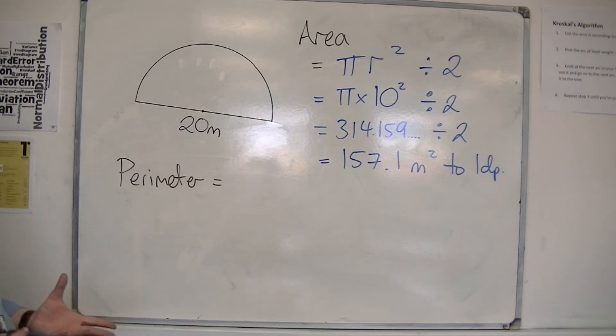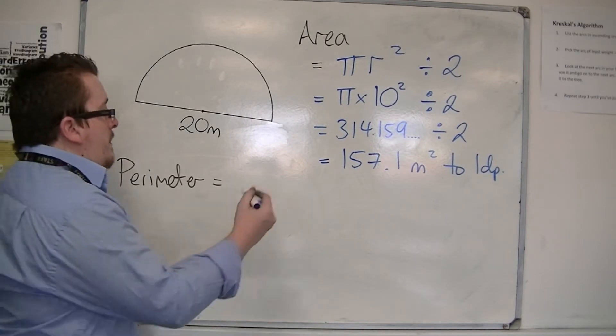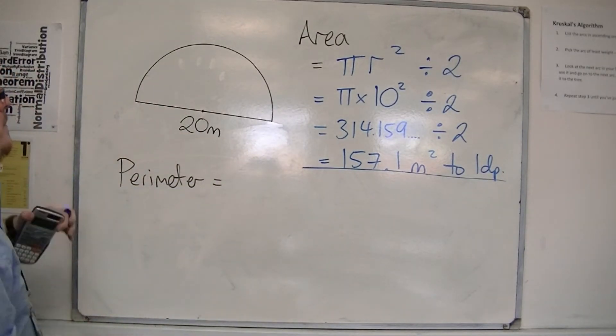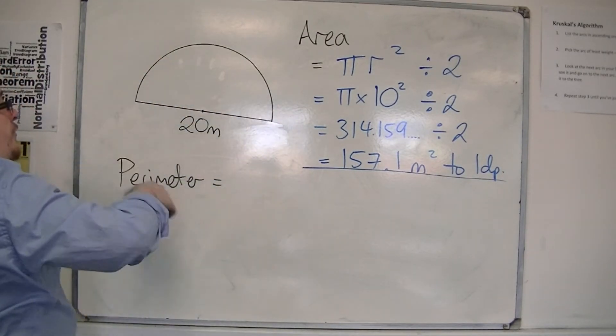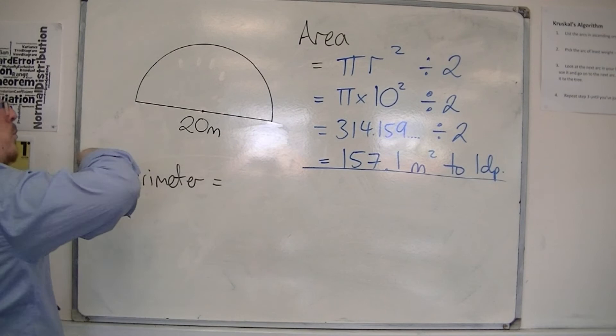If we need the perimeter, then the perimeter is going to be given by the circumference of the whole circle, because we can work that out.